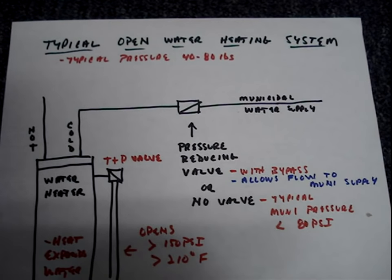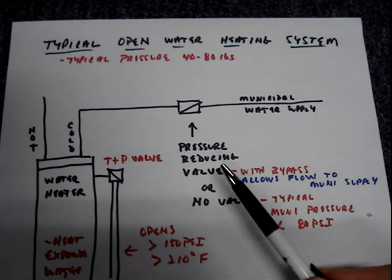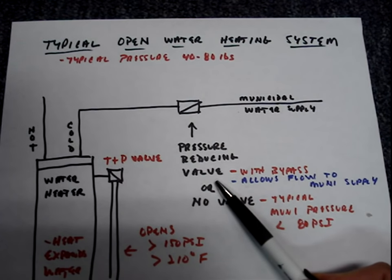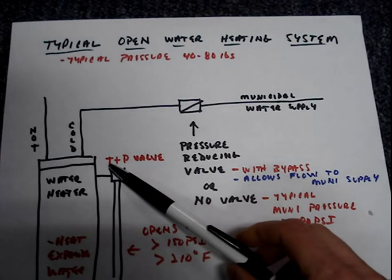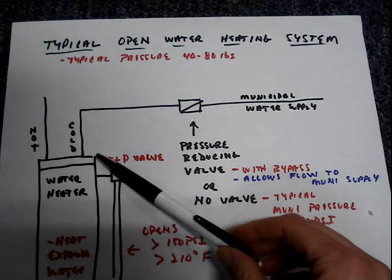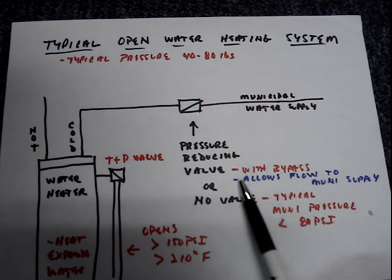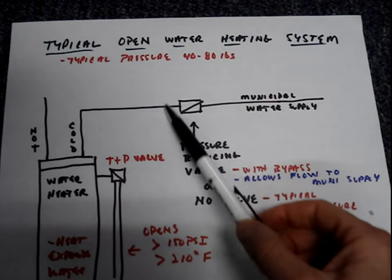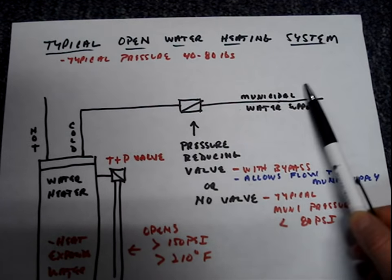An open water heating system has no valve, or it could have a pressure reducing valve with a bypass. When thermal expansion occurs on this type of system, the expanded water is able to either pass through the bypass on the pressure reducing valve, or because there's no valve, it can pass back into the municipal water supply.